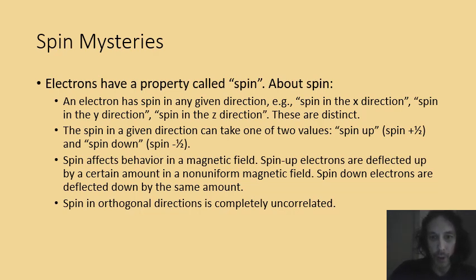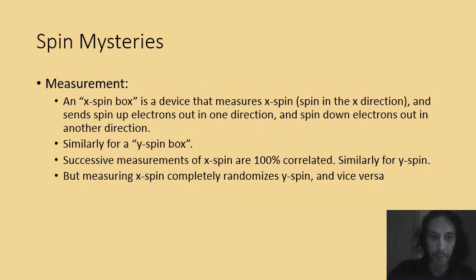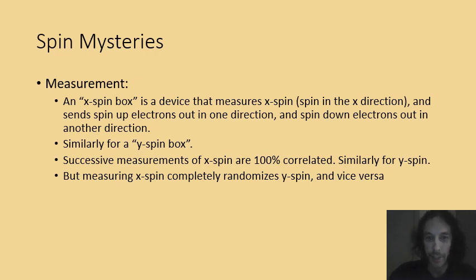Every electron is spin up or spin down in the x direction, and also spin up or spin down in the y and z directions. We can call this an x-spin box — a device that measures the x-spin, basically a Stern-Gerlach magnet. It will send spin up electrons out in one direction and spin down electrons out in another direction, similarly for a y-spin box. If you do successive measurements of the same spin property you get the same result — measure the x-spin of a particle, then measure it again, and it's the same 100% of the time.